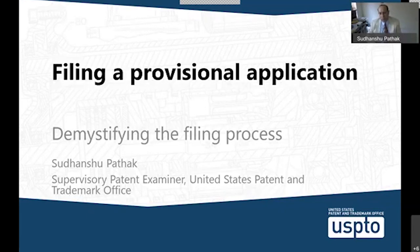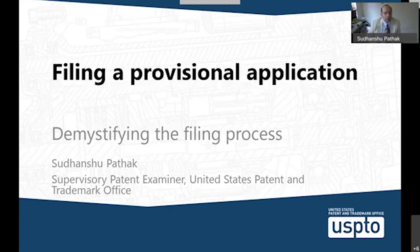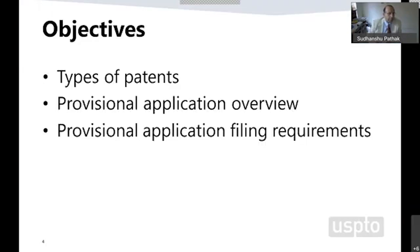I am a supervisor in the Pro Se Assistance Center, so I'm going to focus a lot of my conversation and the slides toward Pro Se applicants. Some of you may be familiar with the process and may find the information a little redundant. However, if you can contribute with some questions that may assist other Pro Se applicants, that would be great. I'm going to go over a generic overview of types of patents, an overview of a provisional application, and the filing requirements. This is more targeted to actually filing the application and its content, as opposed to the overarching process.